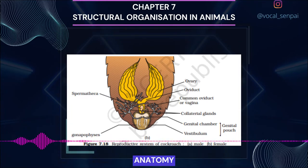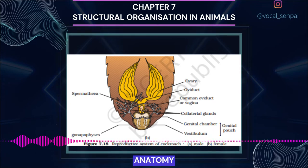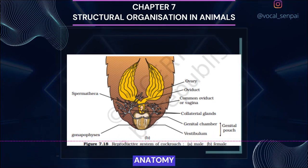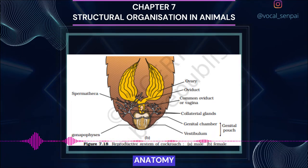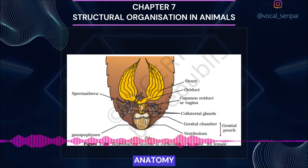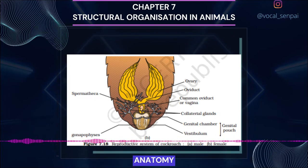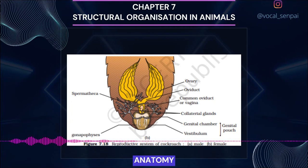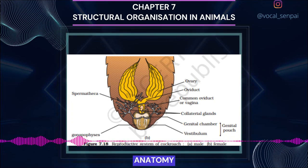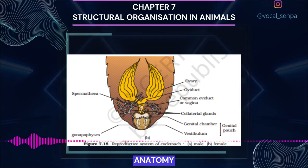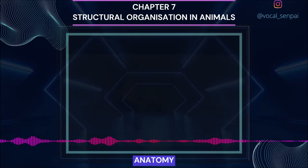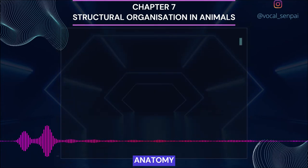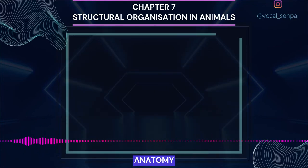Their fertilized eggs are encased in capsules called oothecae — dark reddish to blackish brown capsules about 3/8 inch long. They are dropped or glued to a suitable surface, usually in a crack or crevice of high relative humidity near a food source. On average, females produce 9 to 10 oothecae, each containing 14 to 16 eggs. Many species of cockroaches are wild and of no known economic importance, but a few thrive around human habitats. They are pests because they spoil food, contaminate it with smelly excreta, and can transmit a variety of bacterial diseases by contaminating food material.